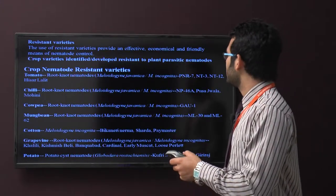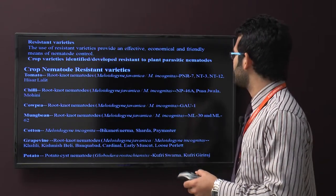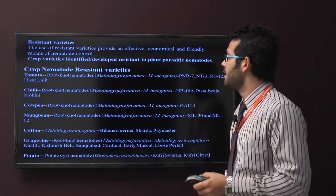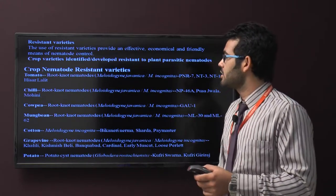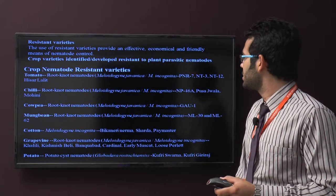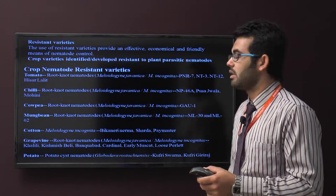First one is tomato. Against the root-knot nematode, the resistant varieties are PNR7, NT3, NT12, and Hisar Lalit. In chili crops, against the root-knot nematode, the resistant varieties are NP46, Pusa Jwala, and Mohini.